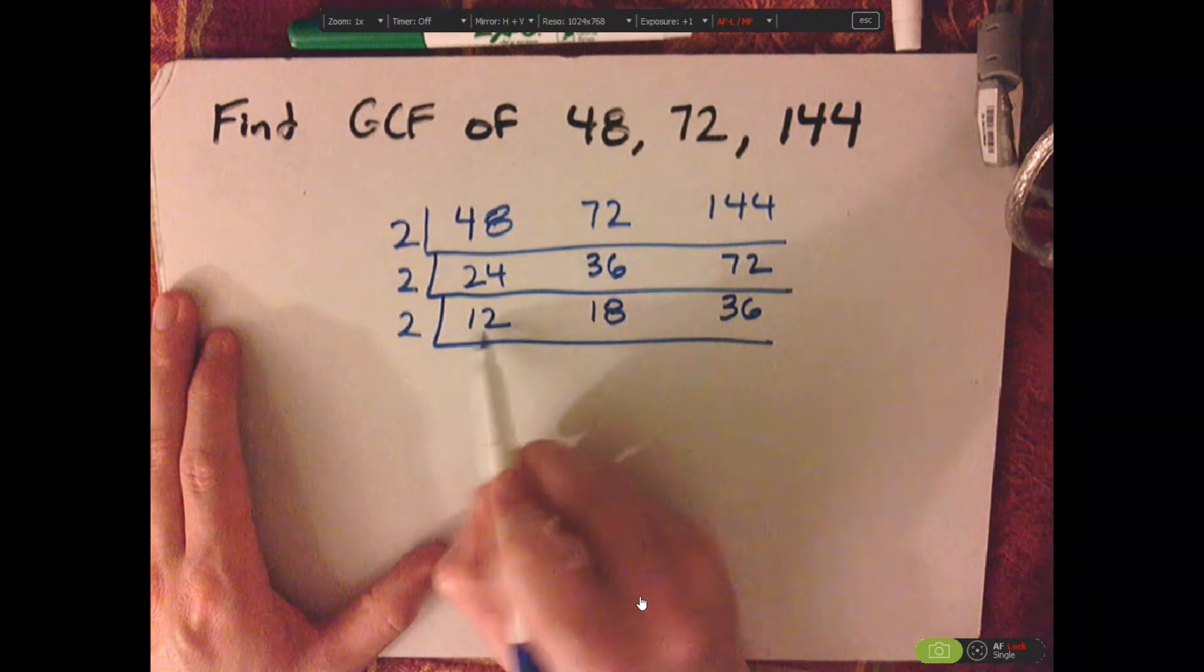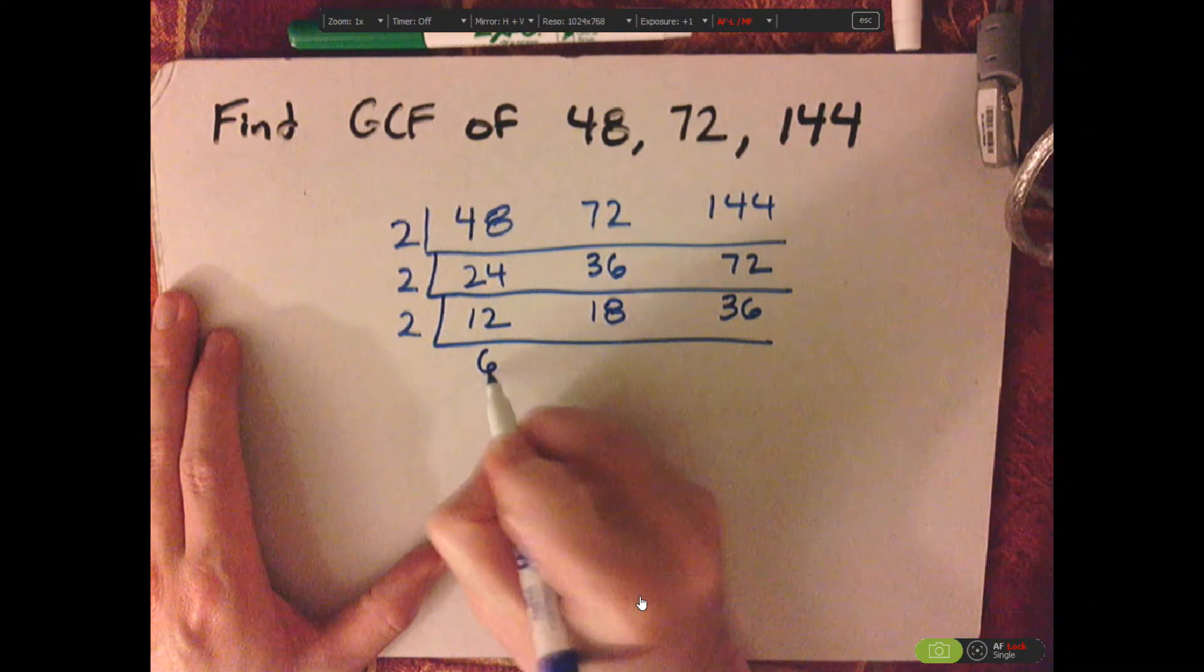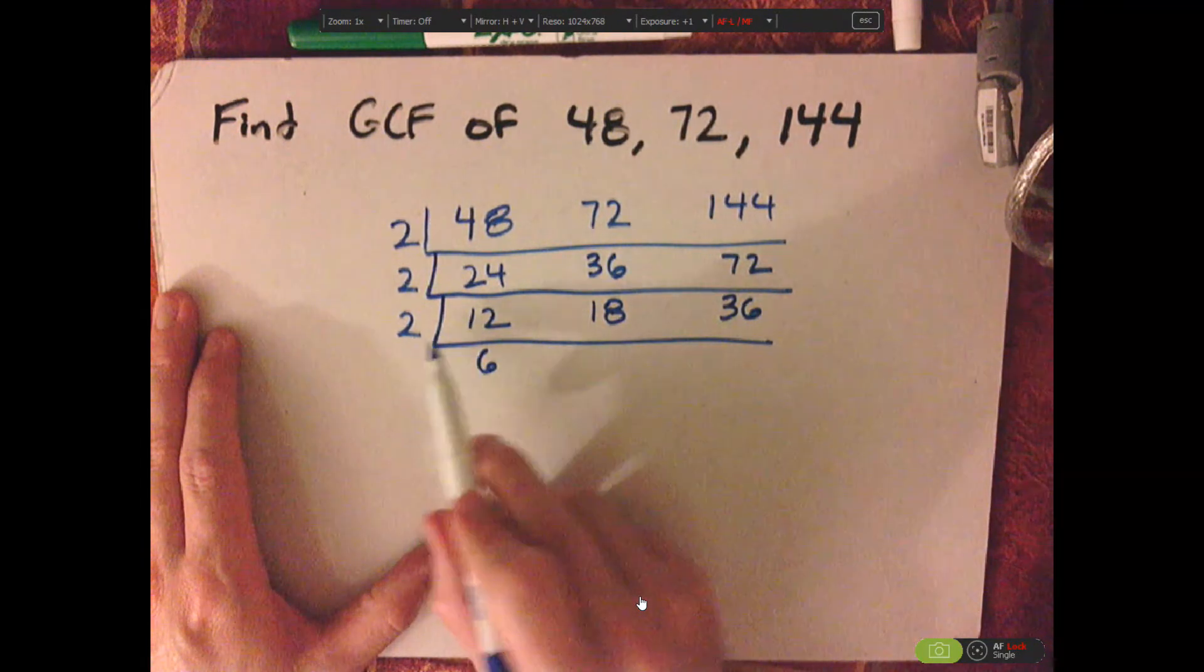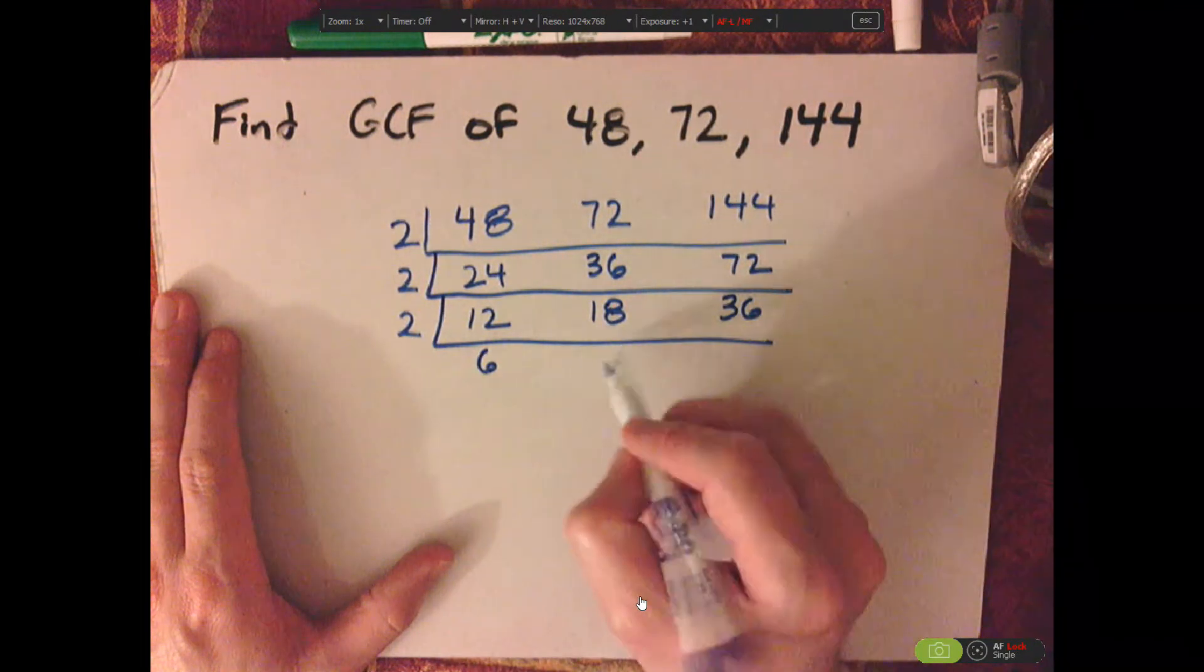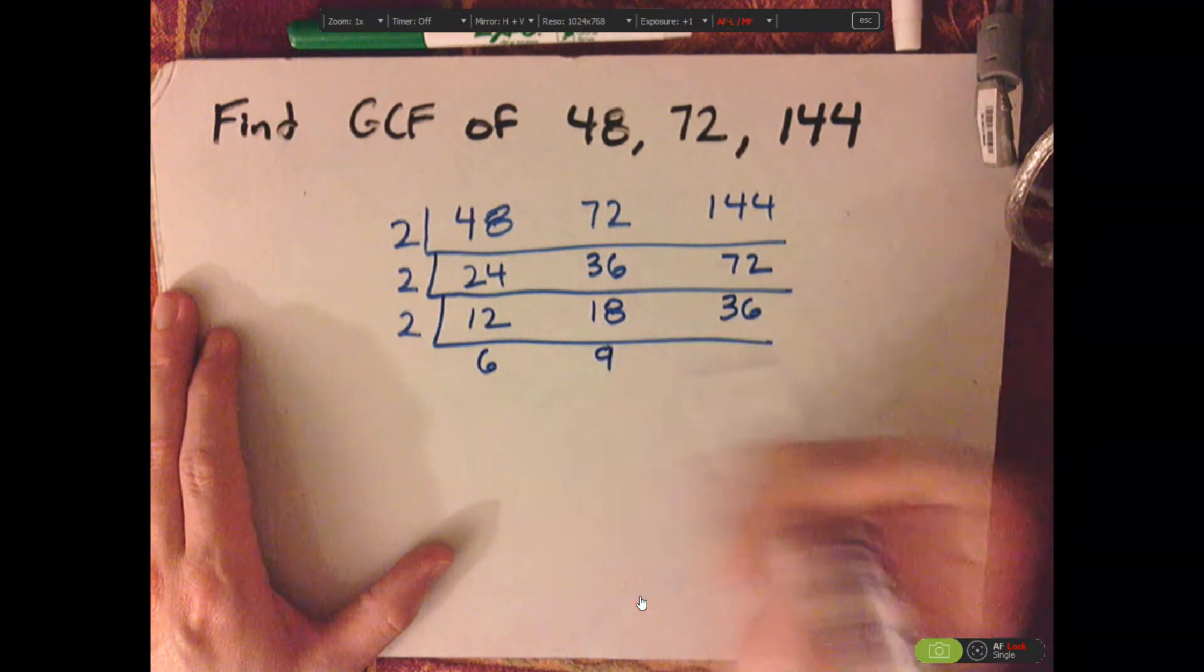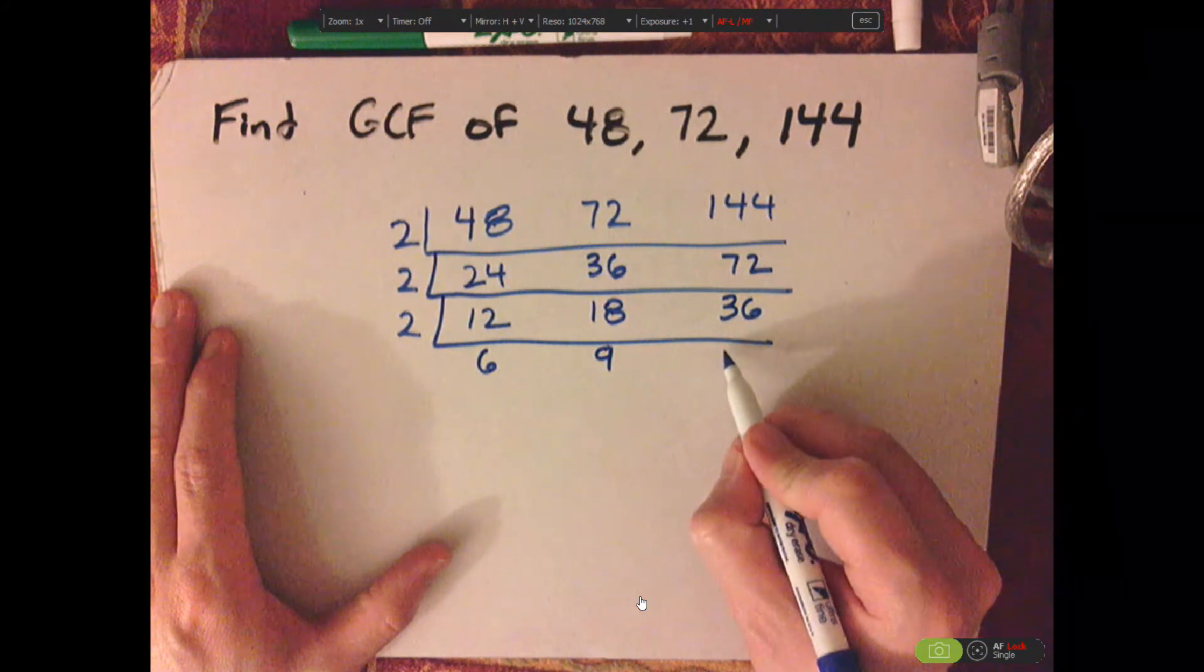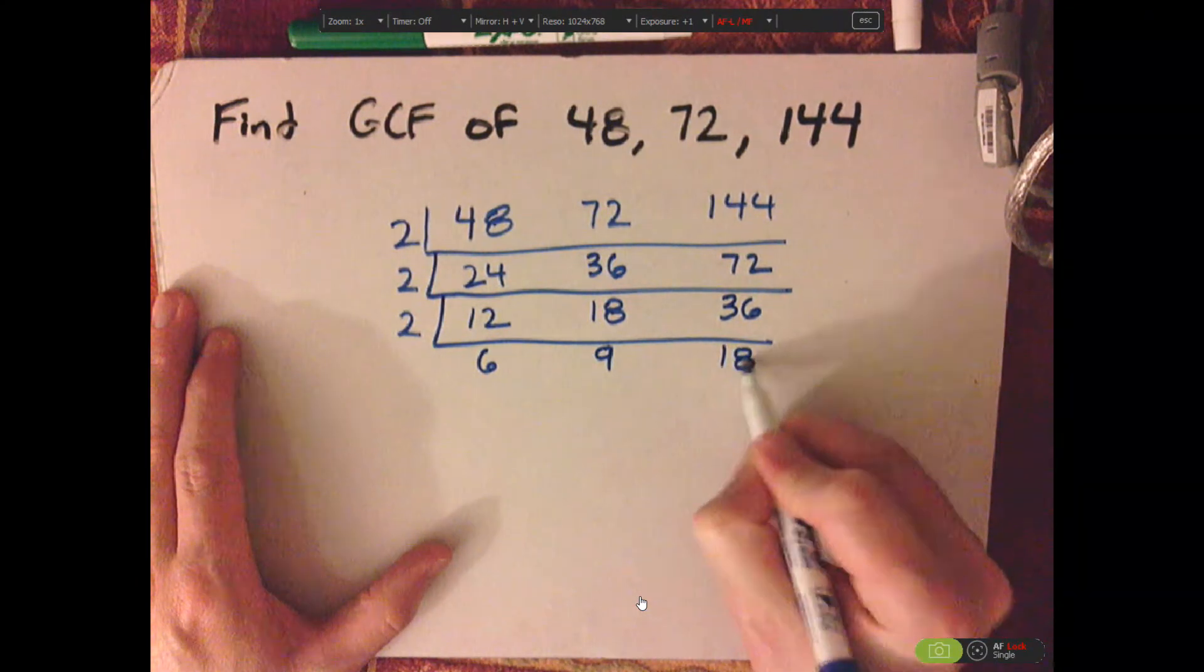So two goes into 12 six times, two goes into 18 nine times, and two goes into 36 eighteen times.